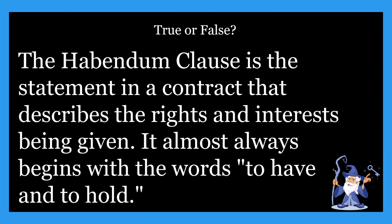Next true or false: the habendum clause is the statement in a contract that describes the rights and interest being given, and it almost always begins with the words 'to have and to hold.' Is that true or false? This one is definitely going to be true. The habendum clause is the statement in a contract that describes the rights and interest being given. If you see the words 'to have and to hold,' think of the habendum clause — those two things go together.